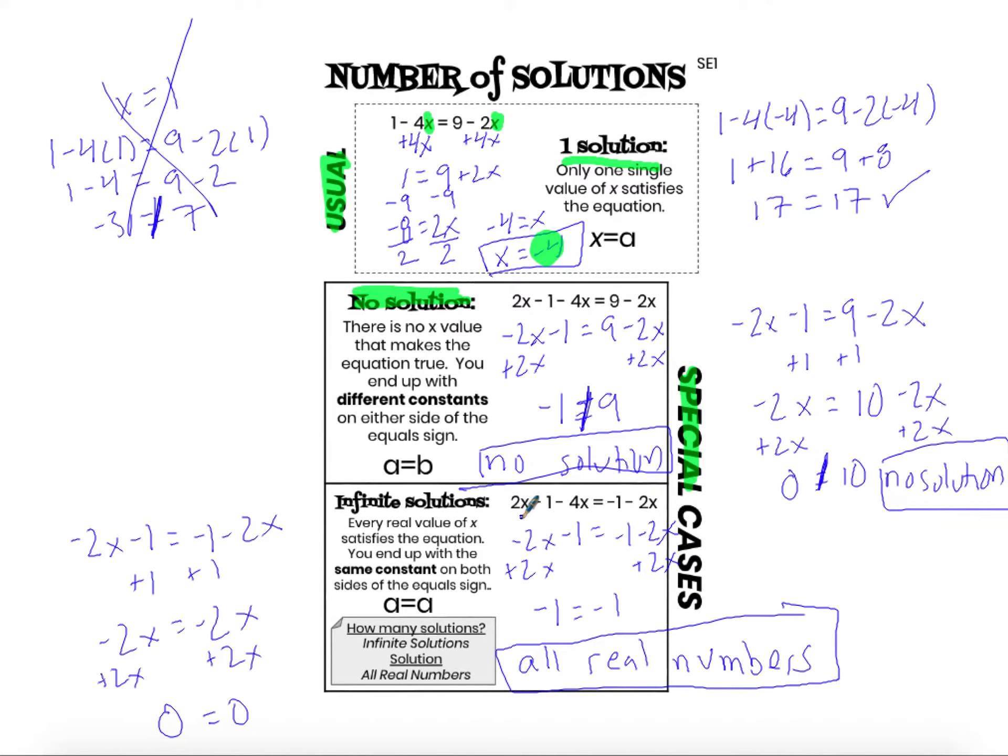Once you understand this, you will be able to immediately look at this line and say, hey, there is no solution because the constant terms are different. Hey, there are infinite solutions because the constant term is the same. That's great. That's a great way to check your answer, but you still need to show your work moving the variable term using inverse operations in order to get to this step as your justification. So you can't just stop here and say all real numbers. You can't just stop here and say no solution.